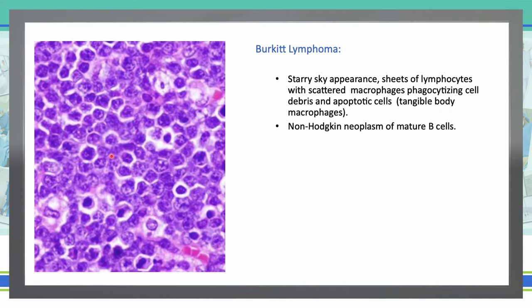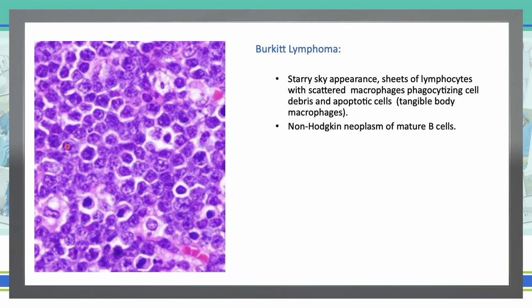In Burkitt lymphoma, we see a starry sky appearance pattern. The tumor cells are B lymphoblasts — large, rounded, with indented nuclei and three or four nucleoli with a thin layer of basophilic cytoplasm — closely opposed to each other, forming a dark blue background. The surrounding macrophages with abundant pale, foamy cytoplasm are scattered among the tumor cells as the stars. These tangible body macrophages are phagocytosing cell membranes and apoptotic cells. This starry sky pattern is present in Burkitt lymphoma, a non-Hodgkin lymphoma neoplasm of mature B cells.